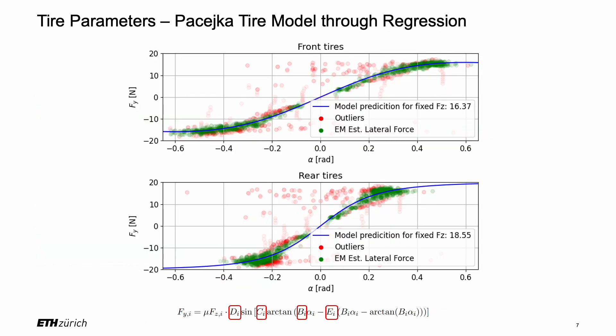The Pacheca tire model was fitted to the obtained data via regression with expectation maximization. This model was chosen as it captures the transition to dynamic friction at high tire slip angles alpha.